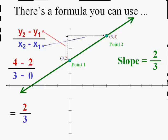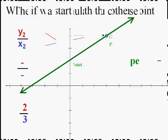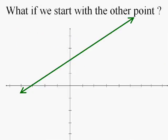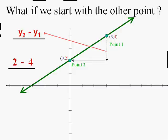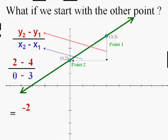So you can get that without even looking at the picture by putting it into the formula y2 minus y1 over x2 minus x1. What if we start at the other point and work backwards? It'll still work. I'm going to let point one be (3, 4) and point two be (0, 2). This time, y2 minus y1 would be two minus four rather than four minus two. And as long as you're consistent, x2 minus x1 gives us zero minus three instead of three minus zero. Two minus four is negative two, and zero minus three is negative three — and if we reduce that, we still get two-thirds.